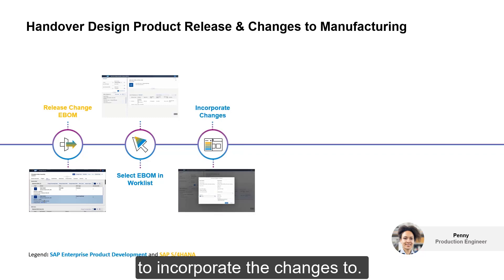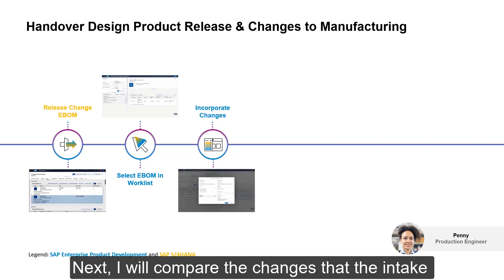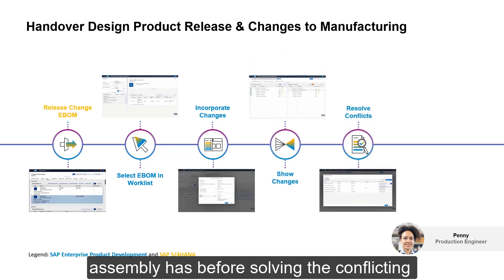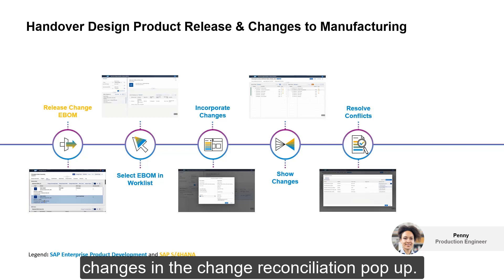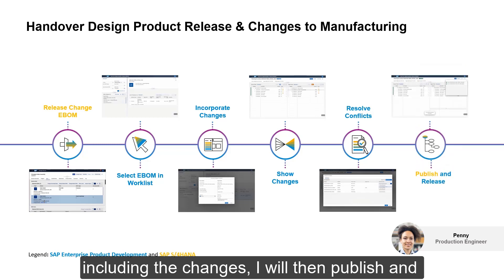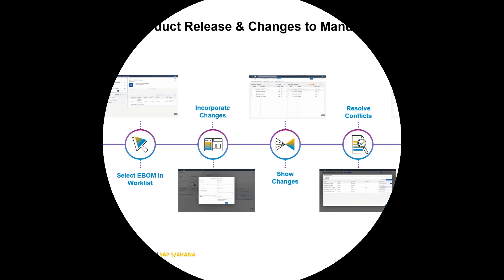After that, I will select the handover that I want to incorporate the changes to. Next, I will compare the changes that the intake assembly has before solving the conflicting changes in the change reconciliation pop-up. Once I am happy with the state of the handover including the changes, I will then publish and release it, which is then ready to be used in the manufacturing downstream processes.